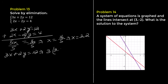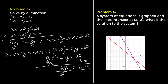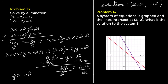Substitute into the first equation to find y: 3 times 3.2 plus 2y equals 12. That gives 9.6 plus 2y equals 12. Subtract 9.6 from both sides: 2y equals 2.4. Divide both sides by 2: y equals 1.2. The solution is 3.2 comma 1.2.